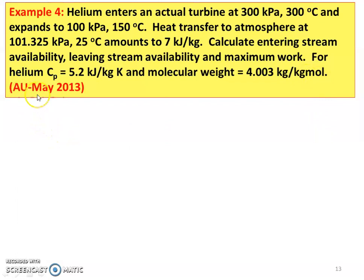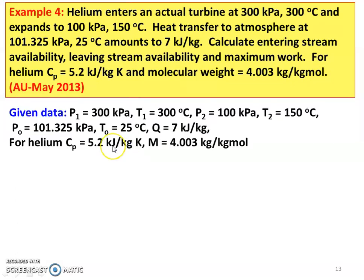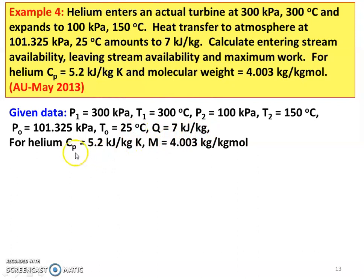This is a May 2013 question. Write down the given data: P1 equal to 300 kPa, T1 equal to 300 degree Celsius, P2 equal to 100 kPa, T2 equal to 150 degree Celsius. Atmosphere pressure PO equal to 101.325 kPa, atmosphere temperature equal to 25 degree Celsius. The heat transfer is 7 kJ per kg. For Helium, CP equal to 5.2 kJ per kg kelvin and molecular weight is 4.003 kg per kg mol.